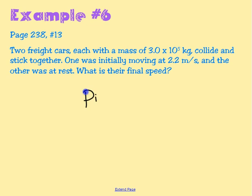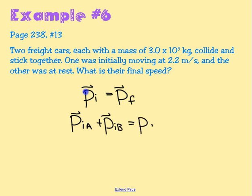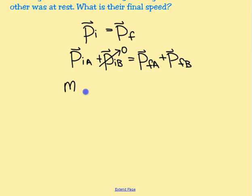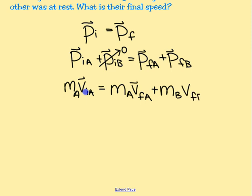We know that the initial momentum of the system must equal the final momentum of the system. This means the initial momentum of each object — P-initial of car A plus P-initial of car B — has to equal P-final of car A plus P-final of car B. Car B was initially at rest, so it has no initial momentum. So: mass of A times V-initial of A equals mass of A times V-final of A plus mass of B times V-final of B.